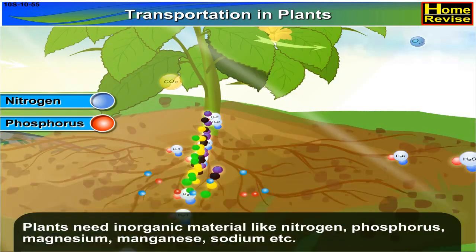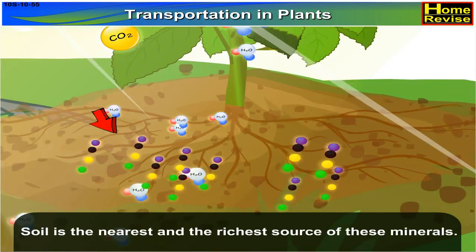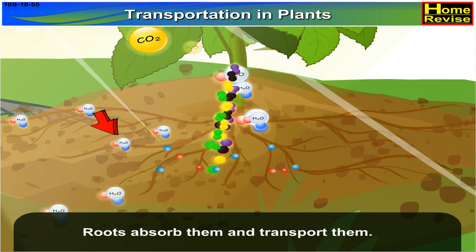Plants need inorganic material like nitrogen, phosphorus, magnesium, manganese, sodium, etc. Soil is the nearest and the richest source of these minerals. Roots absorb them and transport them.